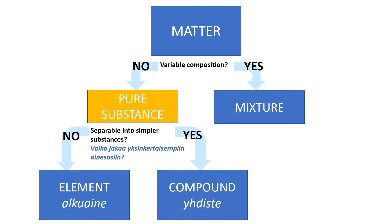Pure substances can be divided into two types: elements — alkuaineet — and compounds — yhdisteet — depending on whether or not they can be broken down into simpler substances.